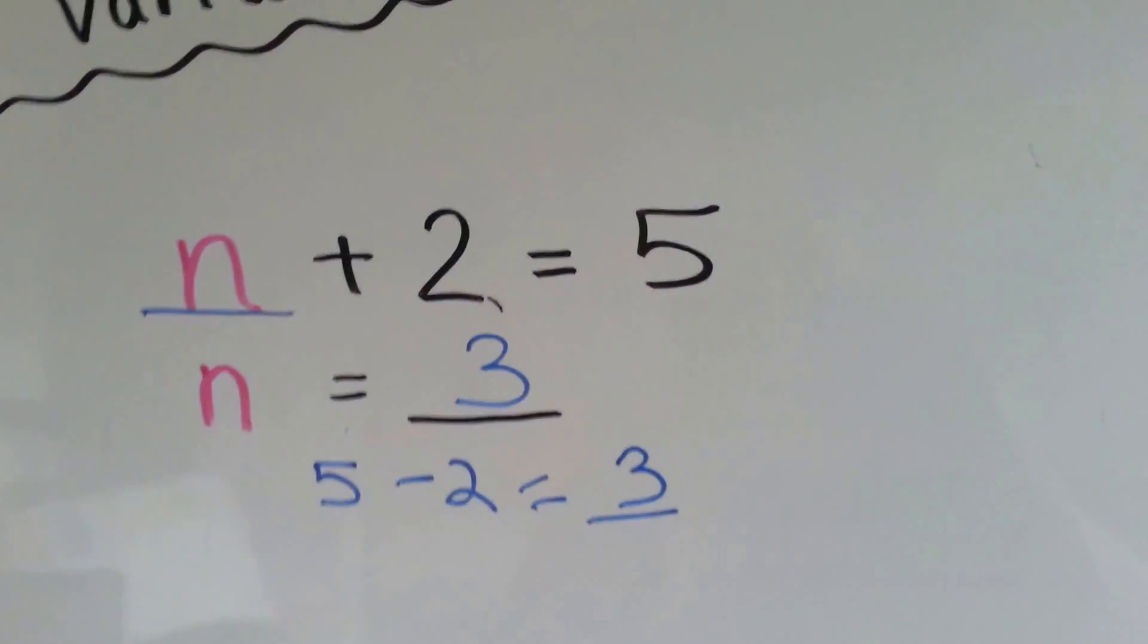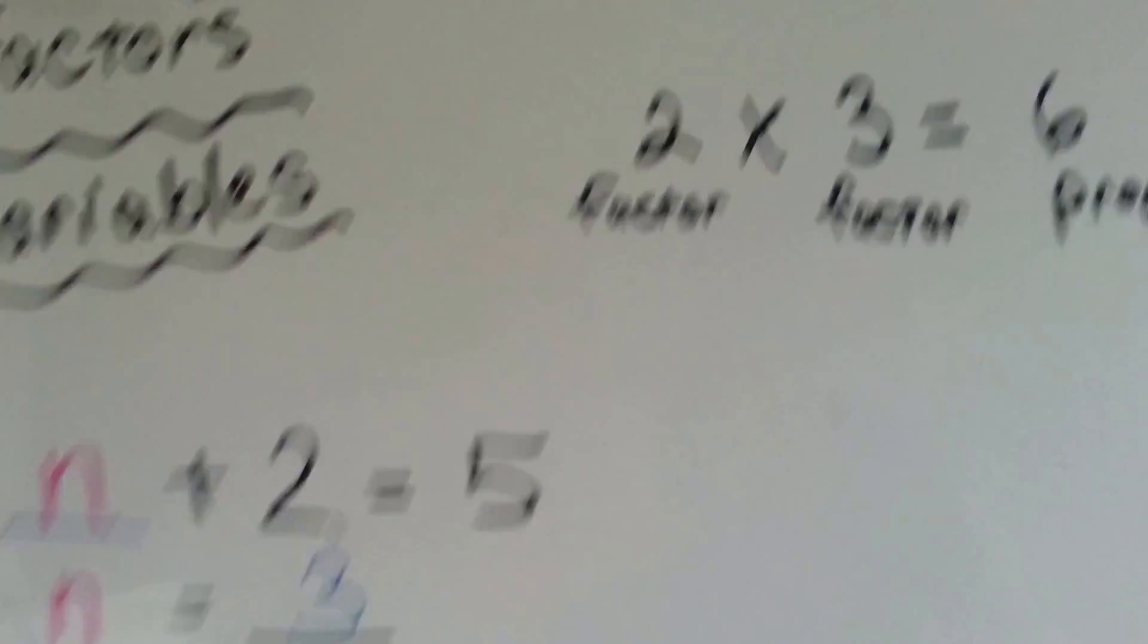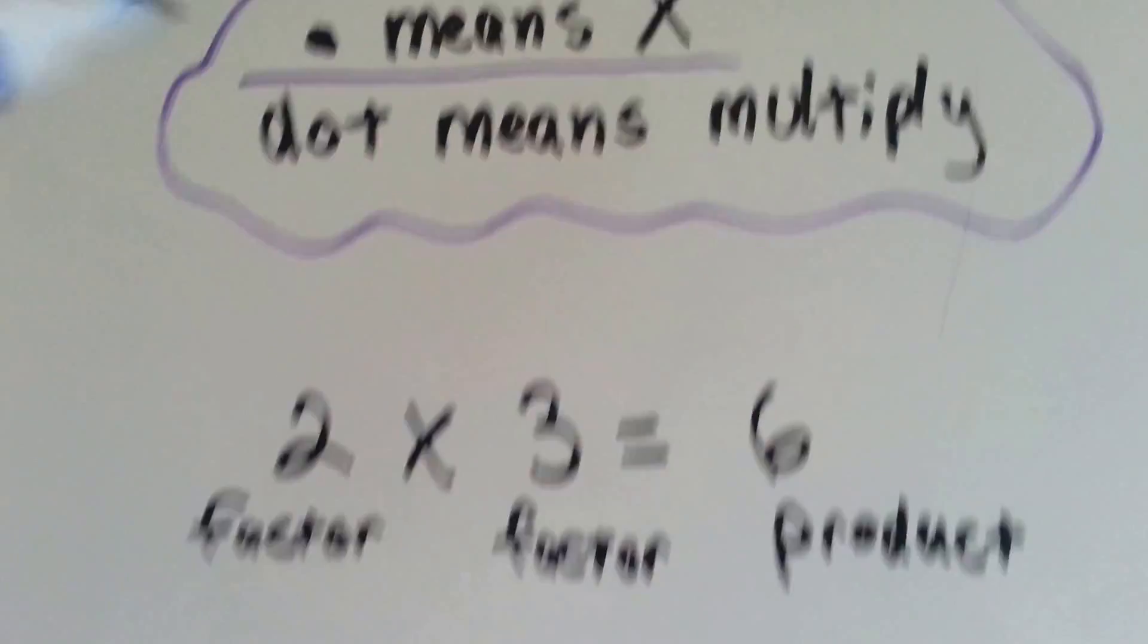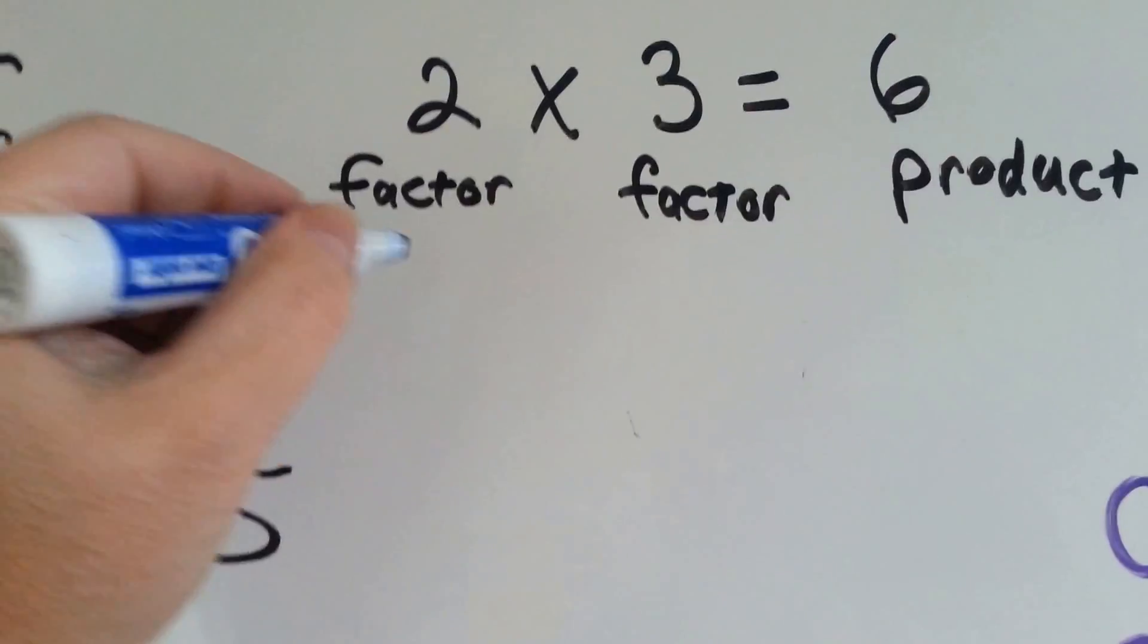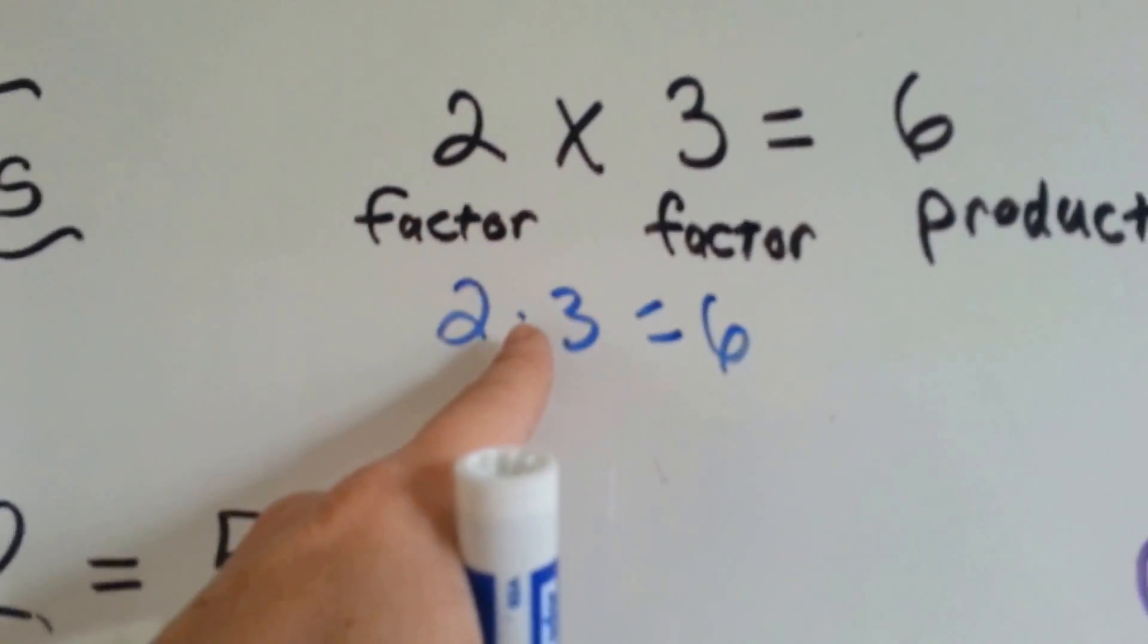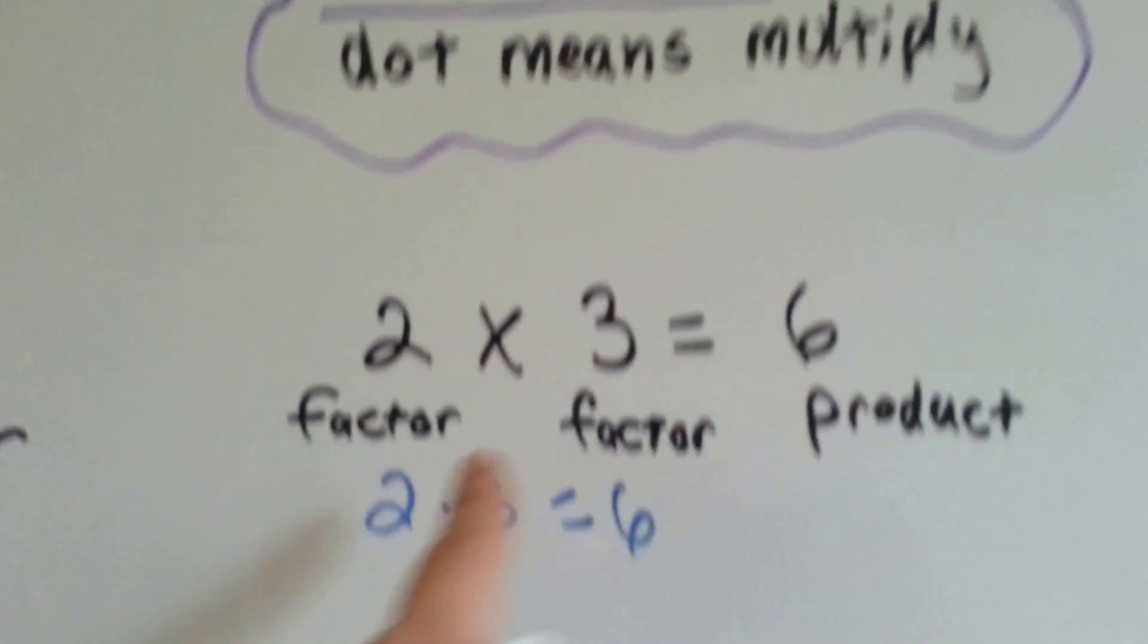Now, I'm going to show you something that they do in algebra and they do in multiplication. What they do is they put a dot instead of an x for times table. Instead of this x, they put a dot. So they would take this away and they would say 2.3 equals 6. See? The dot means to multiply.